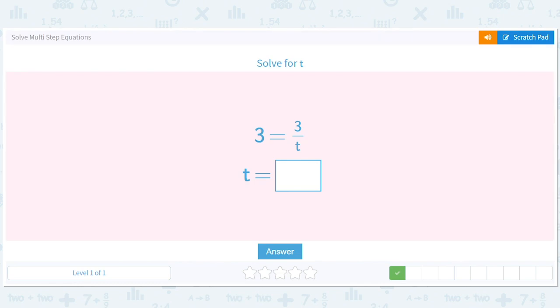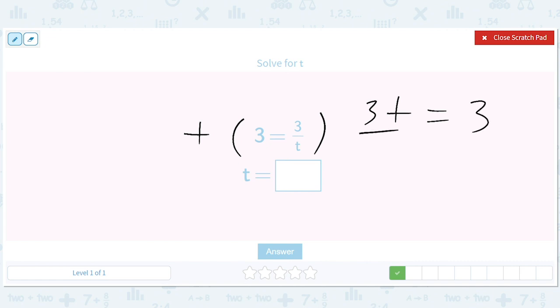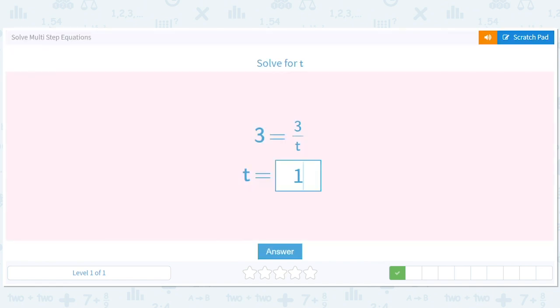I think we can see that the letter here doesn't matter. We can see it should be the same answer as the last one, right? So we can go through the steps a little bit more quickly since we did it. So we'll multiply both sides by t. Multiply both sides by t. That gives us 3t equals 3. And then divide both sides by 3. Gives us t equals 1 again. I did that fast because we just did that problem.